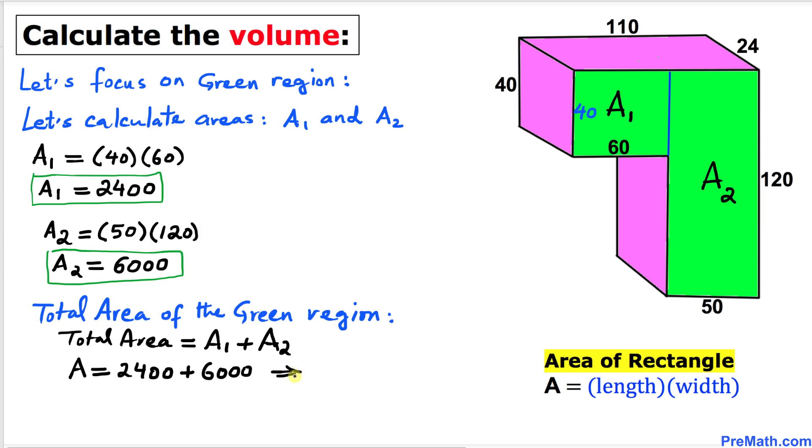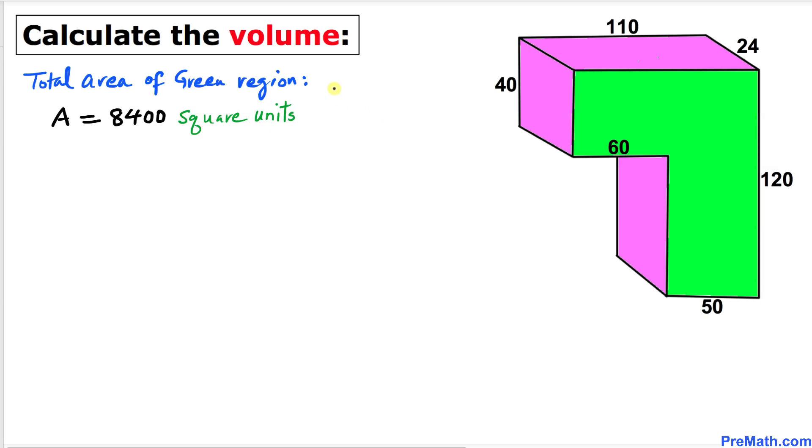8400 square units. Thus, our total area of this green region turns out to be 8400 square units.